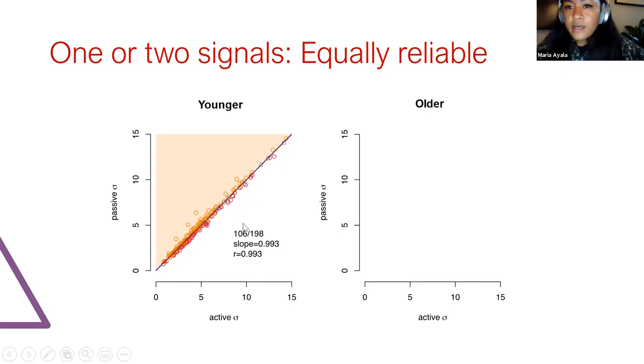When we look at our older participants, there are some that do show that, but they again more or less fall along the identity line, which suggests to us that one or two signals are about equally reliable.